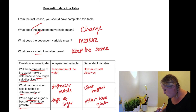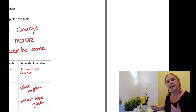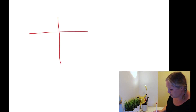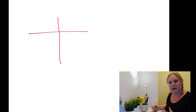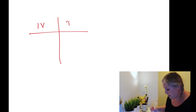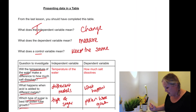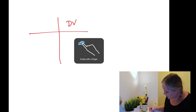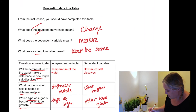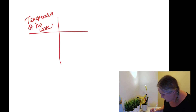It's really important that we know what independent and dependent variables are because we're going to use that when putting data into a table. A table is where we put our data and observations from our experiments. It's really important to have a clear and concise data table before we set about doing our investigation. On the left-hand side you put your independent variable, and on the right-hand side you put your dependent variable. So in the first example: temperature of water on the left, and how much salt dissolves on the right.